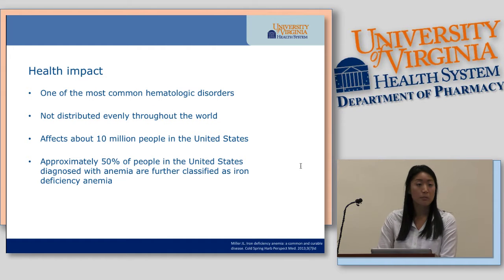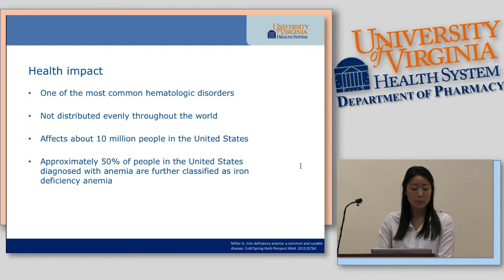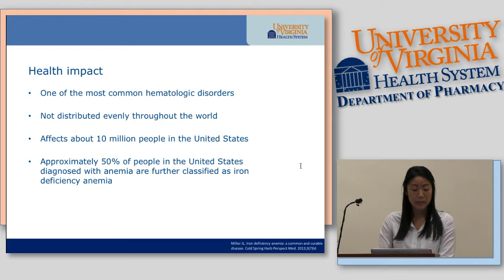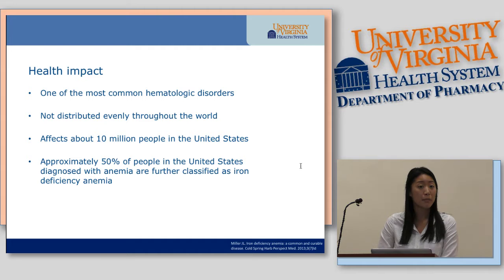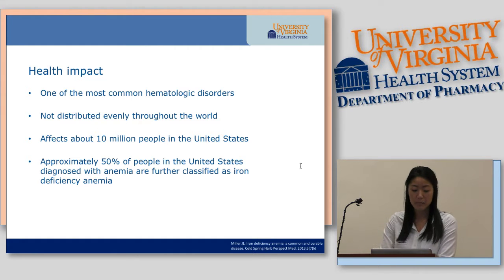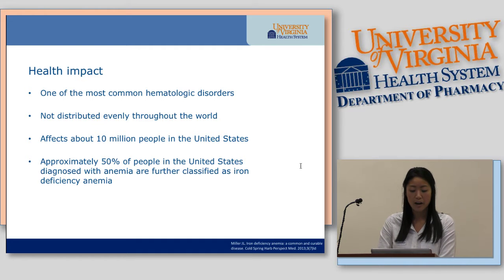Anemia is one of the most common hematological disorders, but it's not distributed evenly throughout the world. There are about 10 million people in the United States affected by anemia, but there's a five-fold increase in underdeveloped areas of the world. In some areas, the prevalence is above 50% in children. Approximately 50% of people in the US diagnosed with anemia are further classified as iron deficiency anemia.